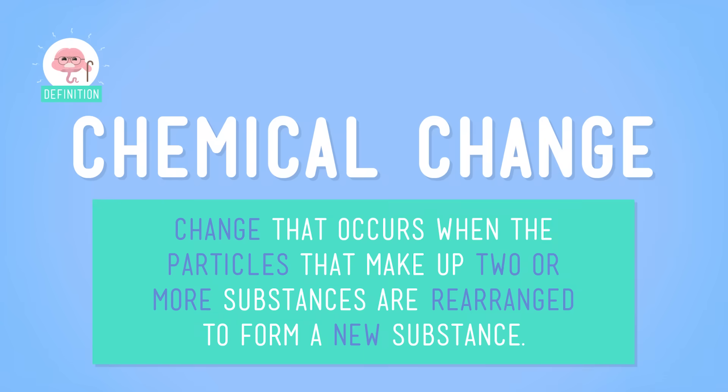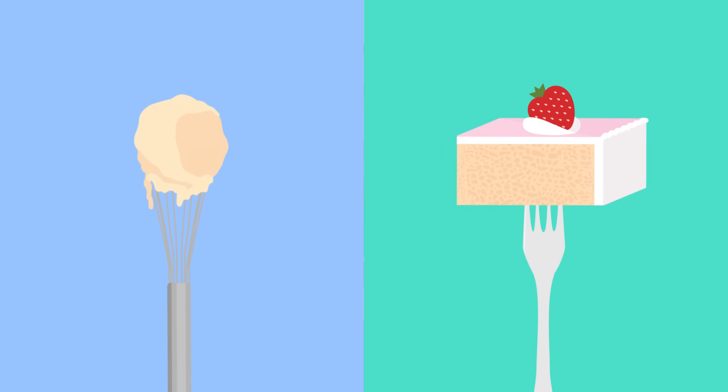You also know that matter can go through chemical changes — changes that occur when the particles that make up two or more substances are rearranged to form a new substance. Like, oh say, pancakes or cupcakes or shortcake? I like cake is what I'm saying here. The matter in wet cake batter turns into a new substance — fluffy, yummy cake. There are clues that a chemical change is occurring, like the production of gas bubbles and that delicious smell. And like all chemical changes, we can't undo that change.